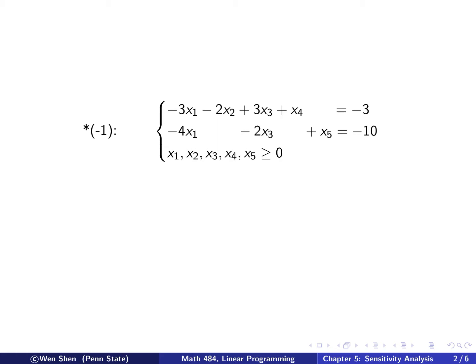It looks like canonical form on the left-hand side, but the right-hand side is negative. If we find the basic solution, these two are basic variables taking values of negative 3 and negative 10. All others are non-basic and zero. This solution is not feasible, because the variables are restricted. Using this as a starting point, we develop a new algorithm.